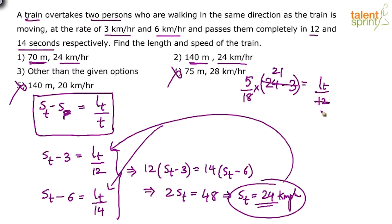This is like 6 into 2, 6 into 3. This goes 7 times 7 to 5, 35 into 2, 140. So length of the train comes out to be 140 meters.